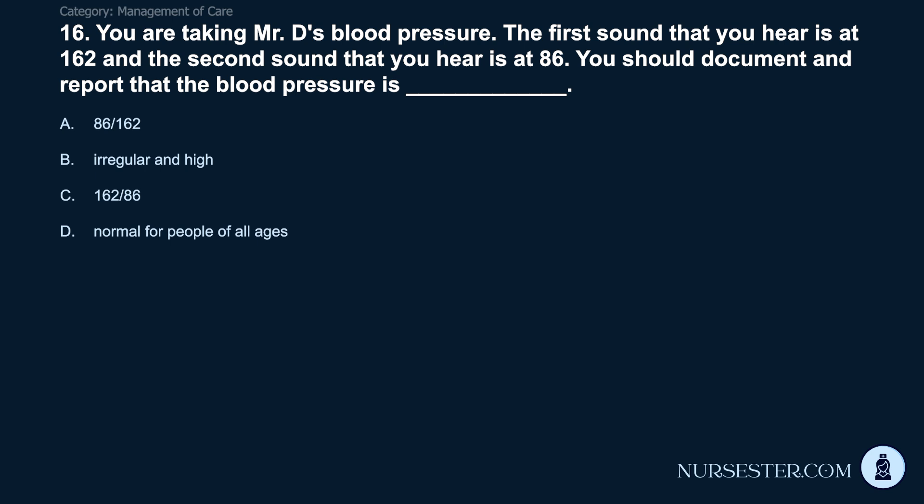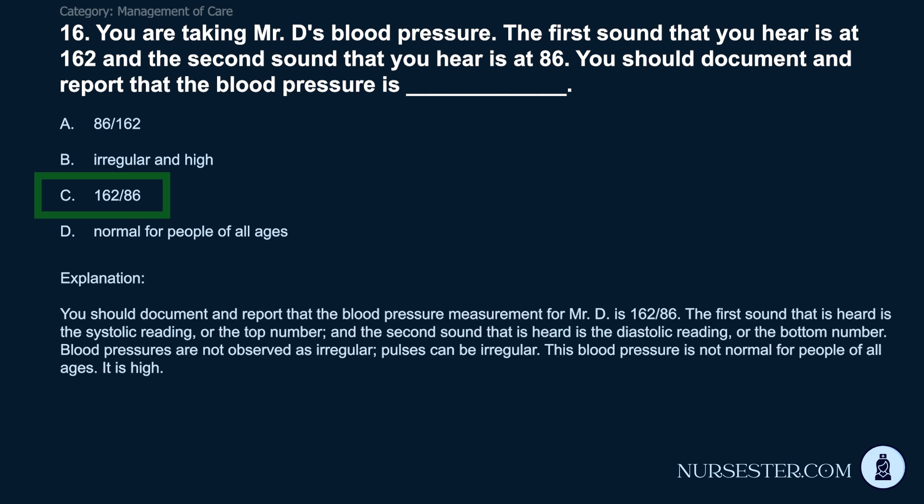Question 16: You are taking Mr. D's blood pressure. The first sound you hear is at 162 and the second sound is at 86. You should document and report that the blood pressure is: A) 86. B) irregular and high. C) 162 and high. D) 162/86. Correct answer: C. 162/86. The first sound heard is the systolic reading (top number) and the second sound is the diastolic reading (bottom number). Blood pressures are not described as irregular — pulses can be irregular. This blood pressure is high, not normal for people of all ages.